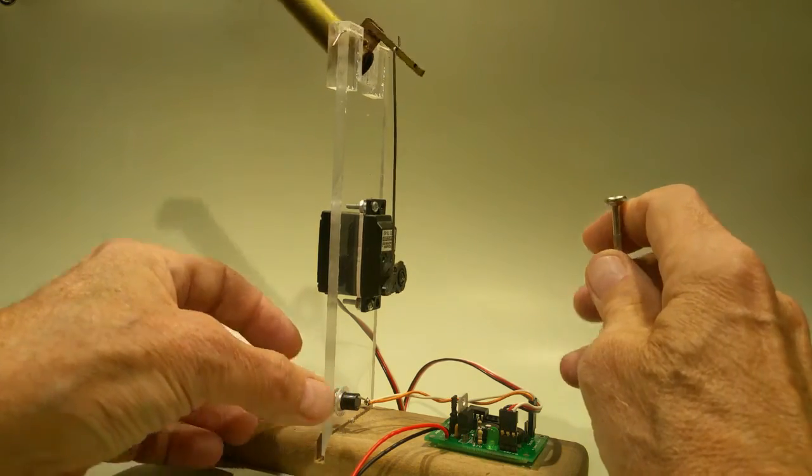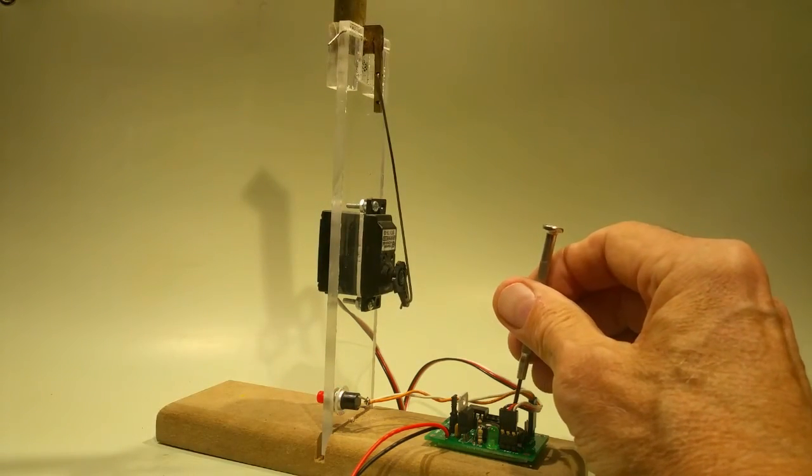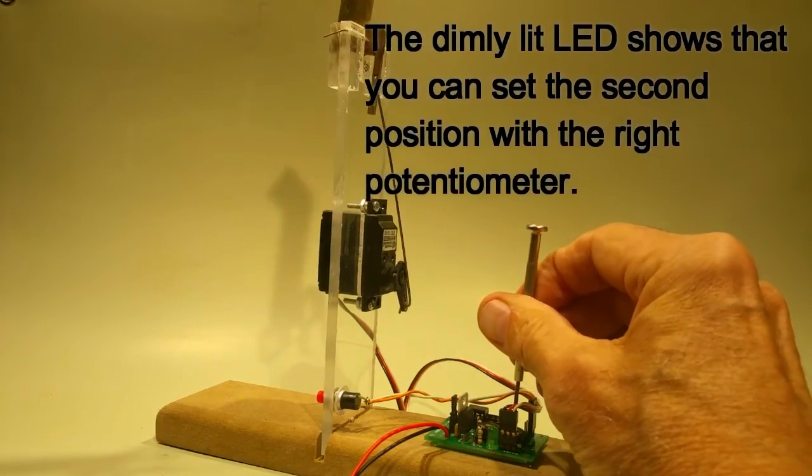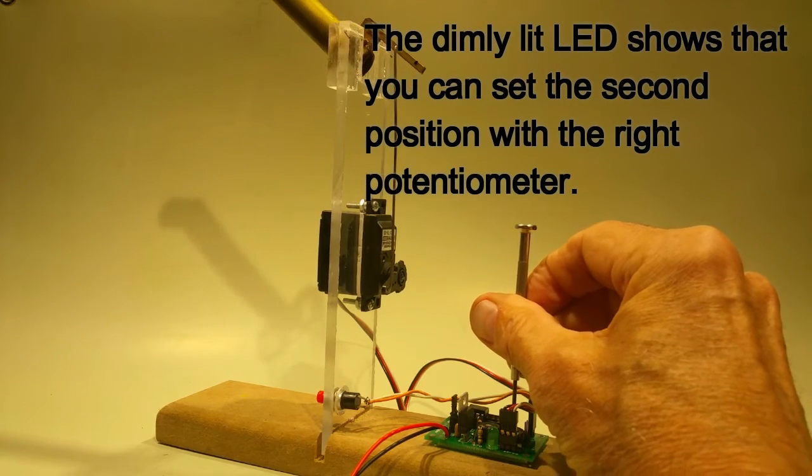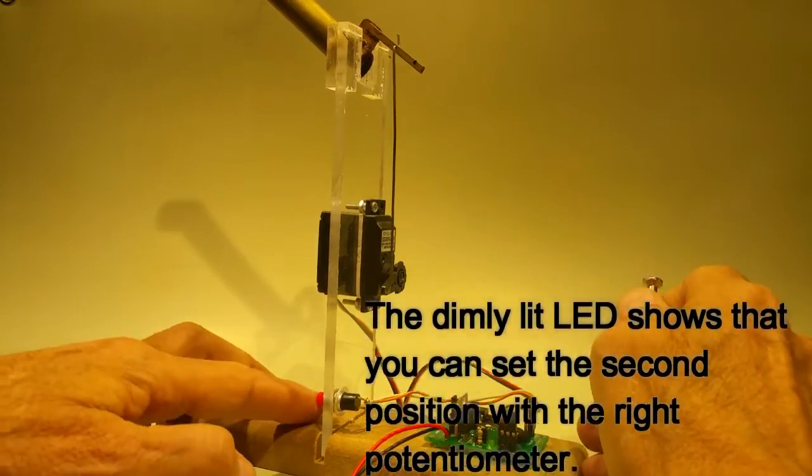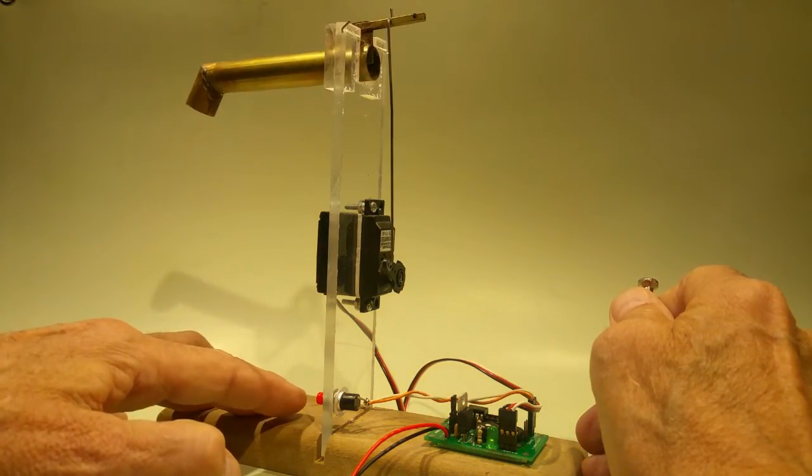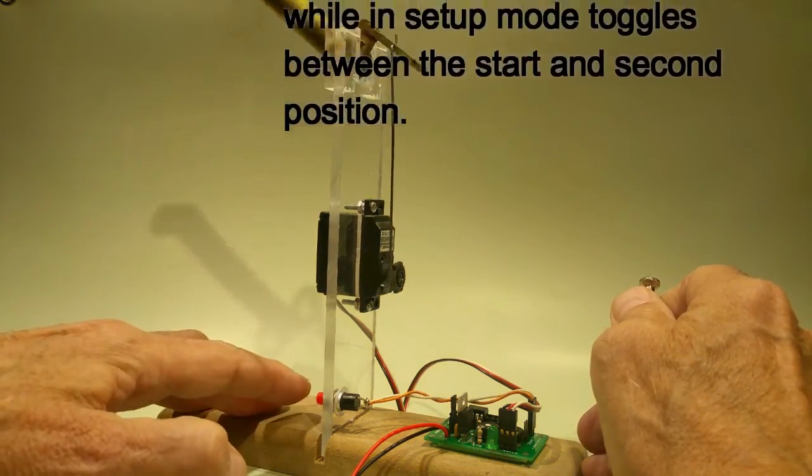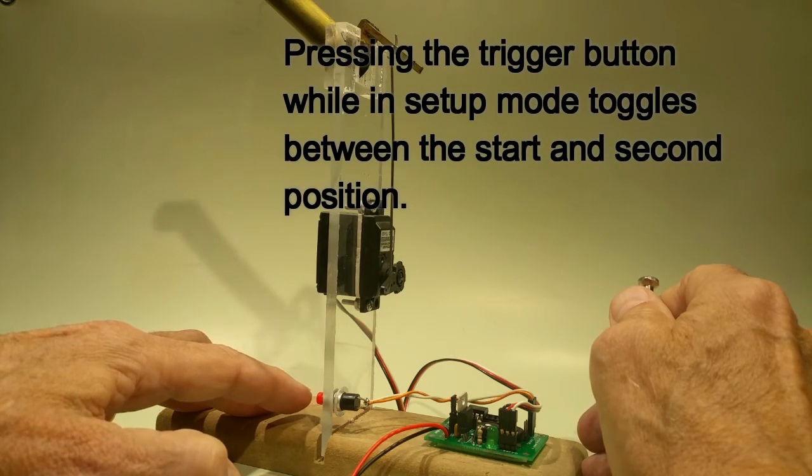And I use the other potentiometer to adjust the upper position. Let's say we wanted that to be at a 45 degree angle. So we've got the first position, I can go back to that by pressing the button, being about horizontal. The second position being at about a 45 degree angle.